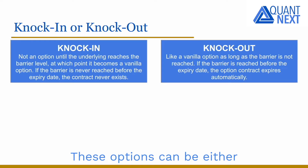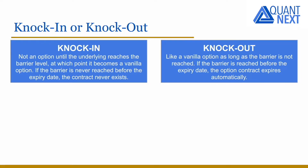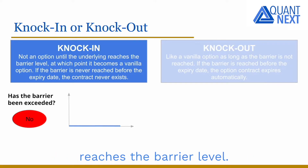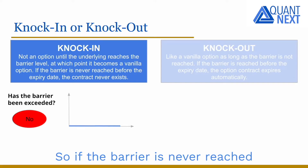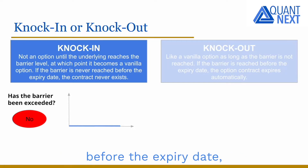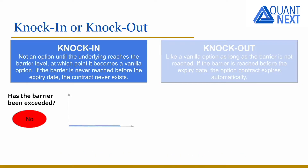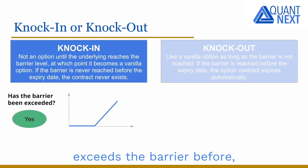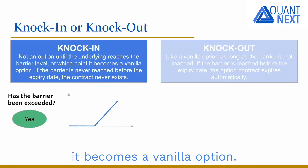These options can be either knock-in or knock-out. A knock-in option is not an option until the underlying asset reaches the barrier level, so if the barrier is never reached before the expiry date, the contract never exists. If the underlying asset price exceeds the barrier before, it becomes a vanilla option.